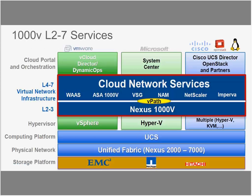In the last two sessions we covered how Nexus 1000V along with VPath can use Layer 4 to Layer 7 services such as ASA, VSG, CSR, and load balancing. We proved that Nexus 1000V works on any hypervisor with any host, any storage, and any switches in the current industry.